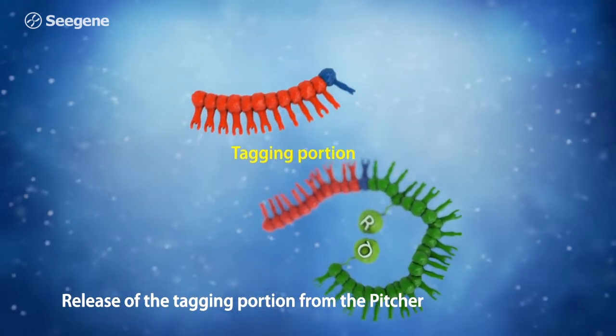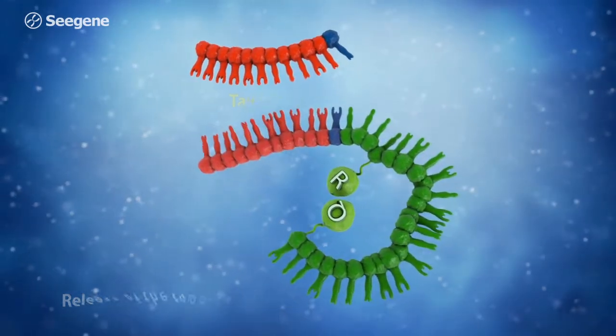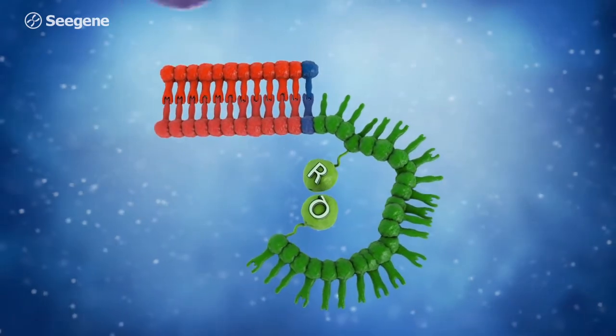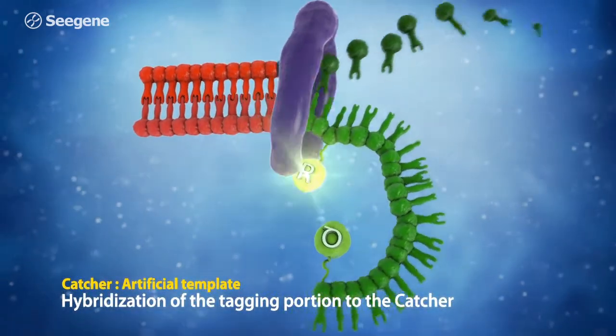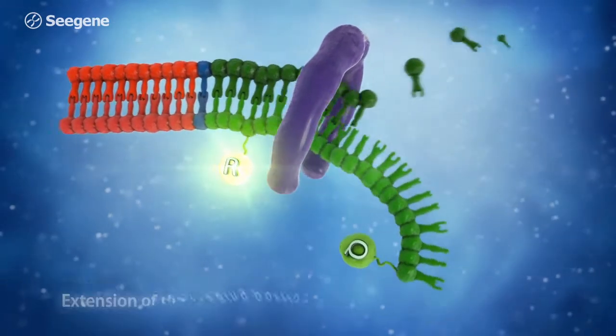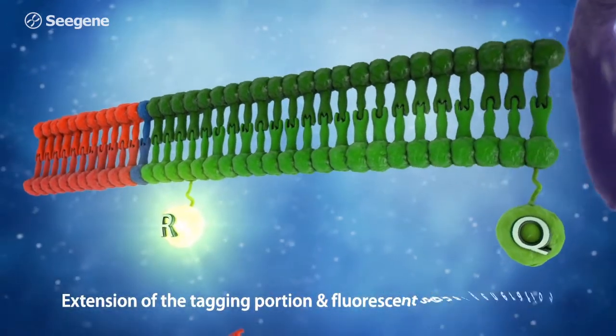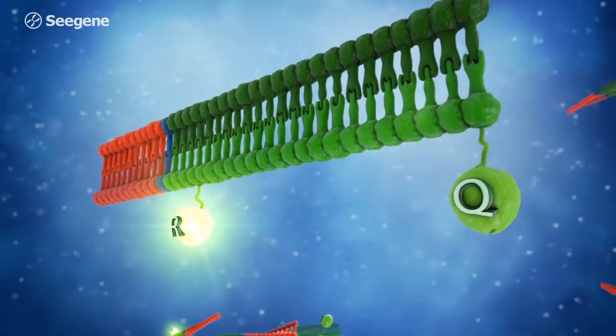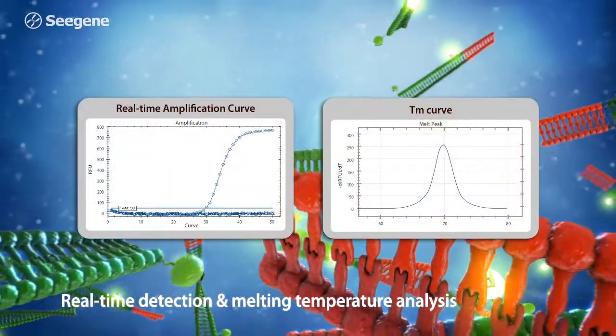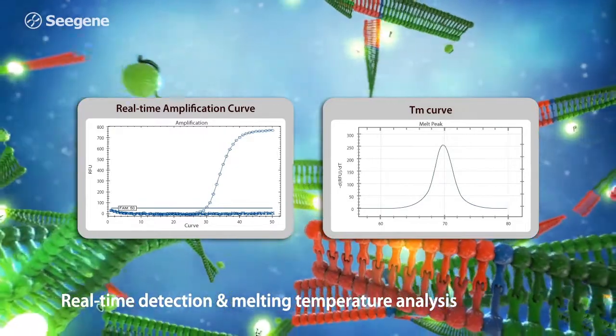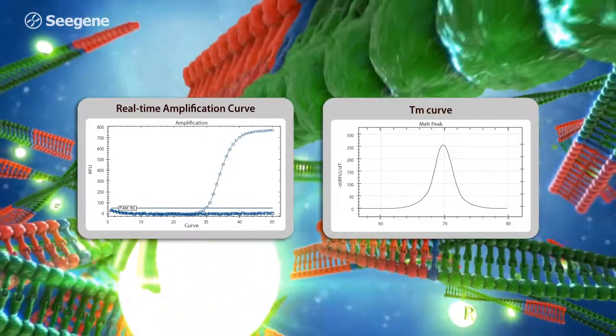The released tagging portion hybridizes to the catcher, which has a complementary sequence of the tagging portion. Extension of the tagging portion separates the fluorescent reporter molecule from the quencher molecule, resulting in signal generation. The signal can be measured in real-time base and or analyzed by melting temperature base to detect the presence of the target sequence.